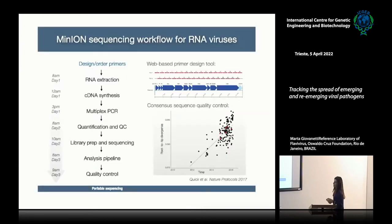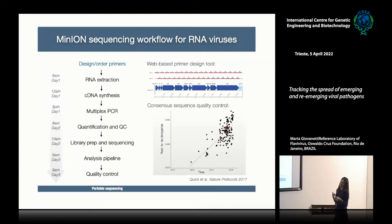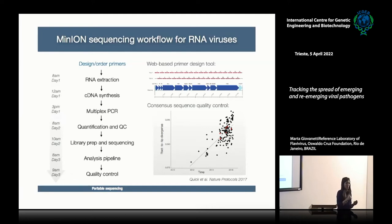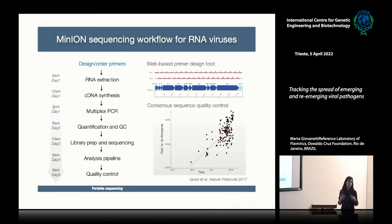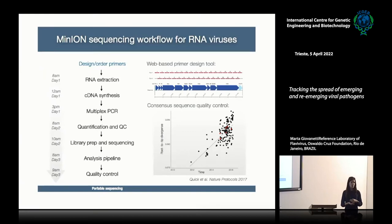This was the workflow we adopted during the Zika epidemic. At that time, we estimated the entire workflow would take at least three days, and we were able to generate around 12 to 24 samples in three days. Nowadays, the techniques have changed a lot, and in at least 24 hours we will be able to obtain more than 96 samples.